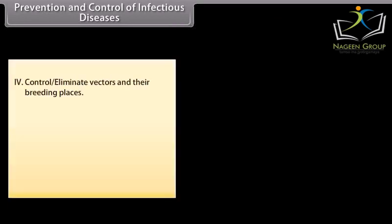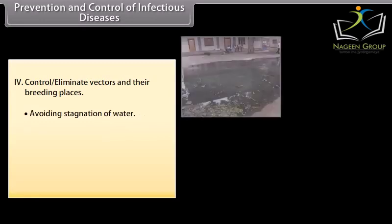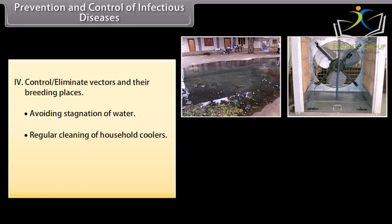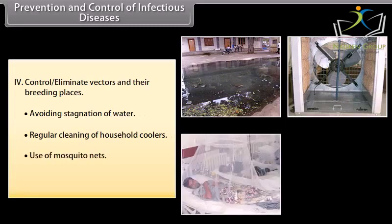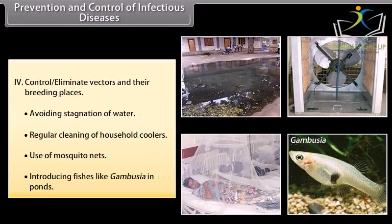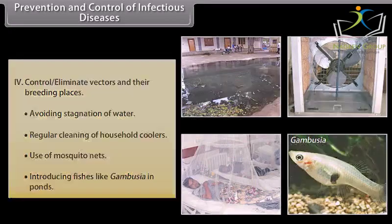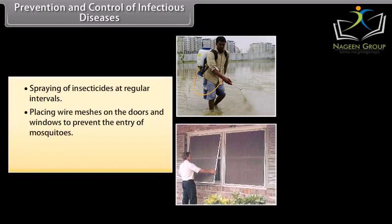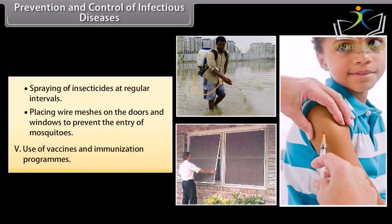Control measures include eliminating vectors and their breeding places, avoiding stagnation of water, regular cleaning of household coolers, use of mosquito nets, introducing fishes like Gambusia in ponds, spraying of insecticides at regular intervals, and placing wire meshes on doors and windows to prevent the entry of mosquitoes. Use of vaccines and immunization programs is also important.